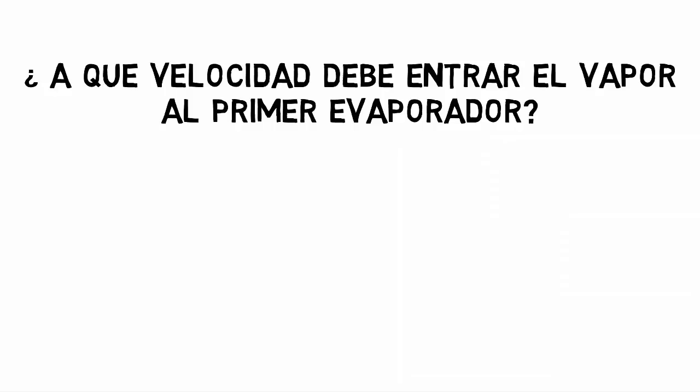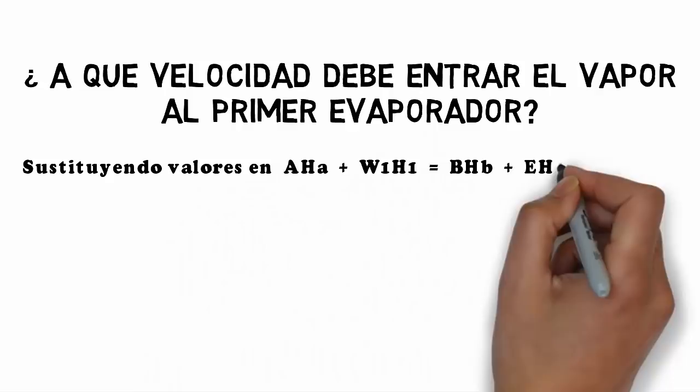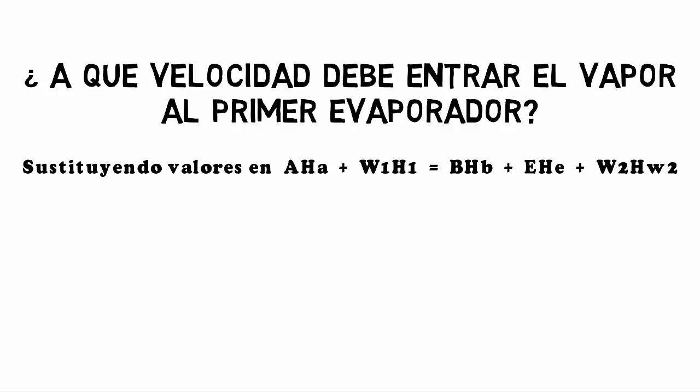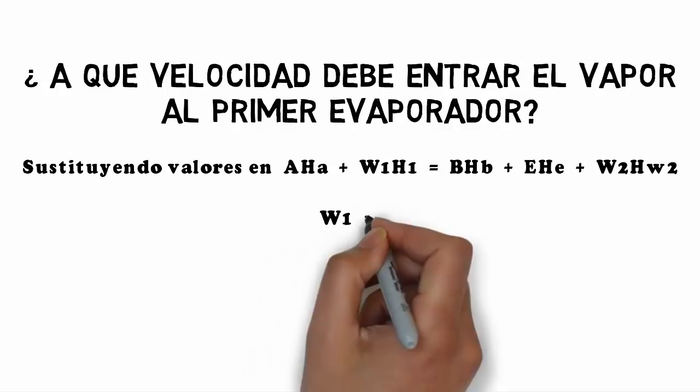Inciso B asks: at what flow rate must the steam enter the first evaporator? We have the following equation: A·ΔhA + W1·Δh1 = B·ΔhB + E·ΔhE + W2·ΔhW2.